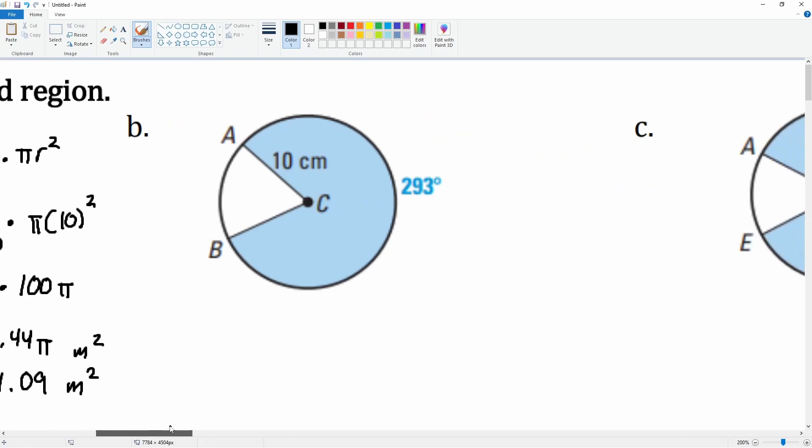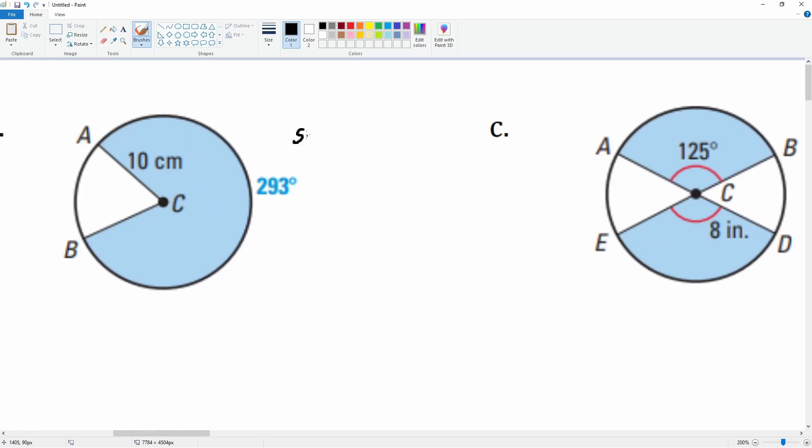Next part. Again, the sector is equal to the angle over 360 times the complete area of pi r squared. I have r here which is 10, and I have the angle here which is 293 degrees. I can just plug it in: 293 divided by 360 times 100 pi, r which is 10 squared.